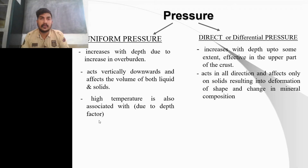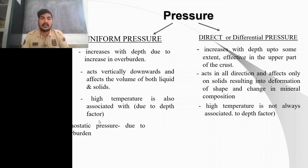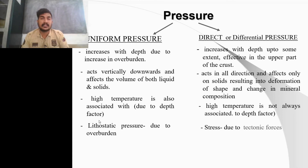Uniform pressure is always associated with high temperature since it derives from lithostatic pressure and the geothermal gradient. Directed pressure is associated with tectonic force, so it may or may not be associated with high temperature. An example of uniform pressure is lithostatic pressure — the pressure due to the weight of the overburden. An example of directed pressure is stress due to tectonic deformation.